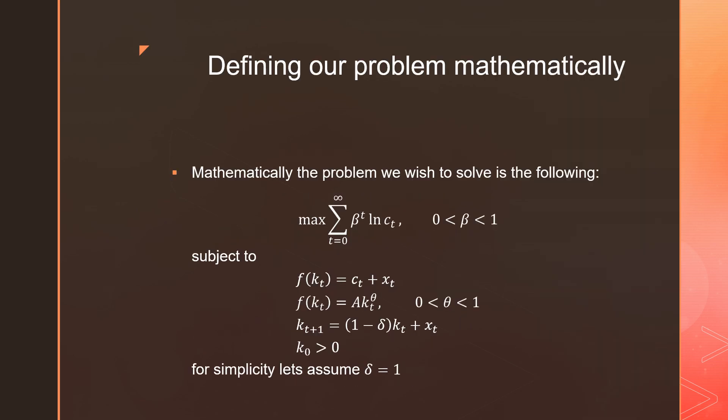So let's define our problem mathematically. As you can see, it's just the usual setup. We're maximizing this utility function over an infinite lifetime subject to these constraints. We have our resource constraint, we have our production function, we have our law of motion, and we're going to assume that our initial capital stock is greater than zero.